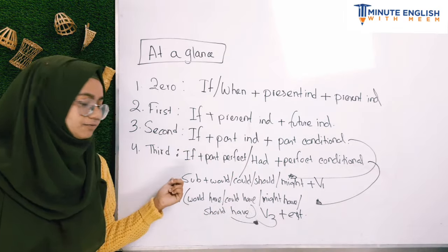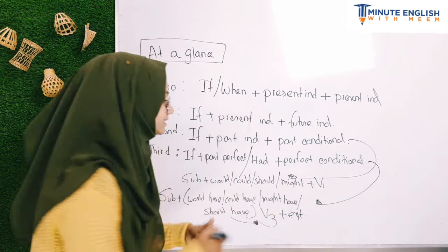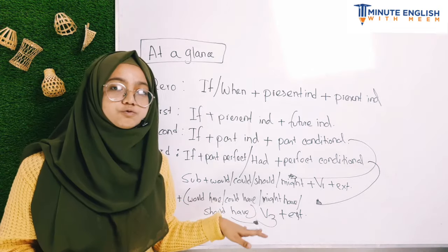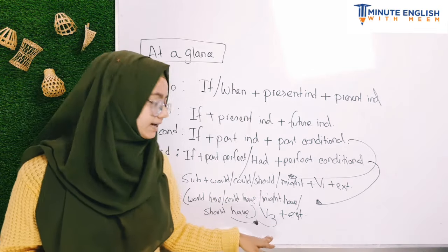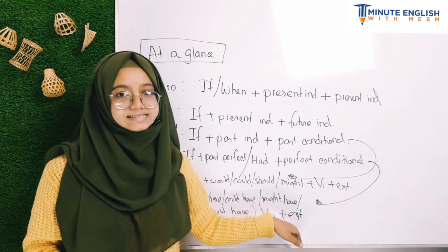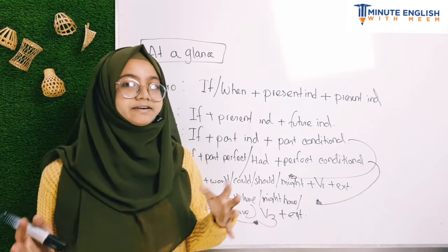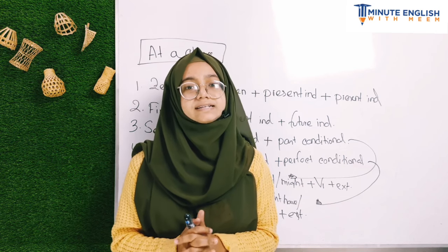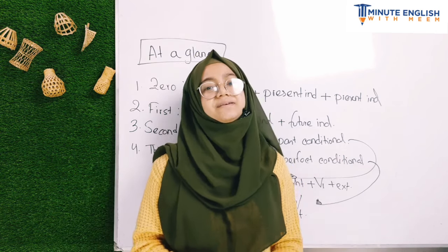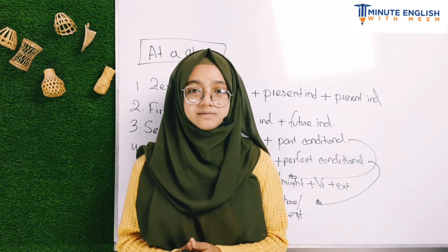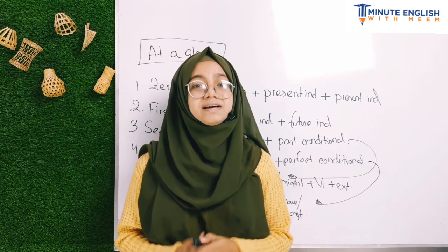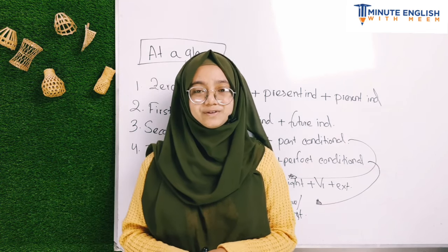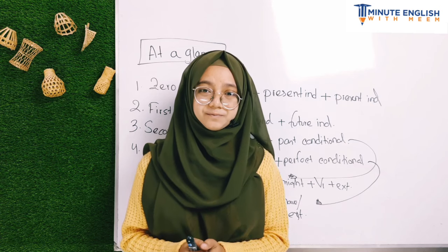For the past conditional, we use: subject + would/could/should/might + have. For example: 'should have.' Stay connected to One Man English with me to get amazing lessons like this. We try to learn English in the easiest way. Don't forget to share this lesson with all your friends and family members so that they can enjoy it too. See you — stay blessed.